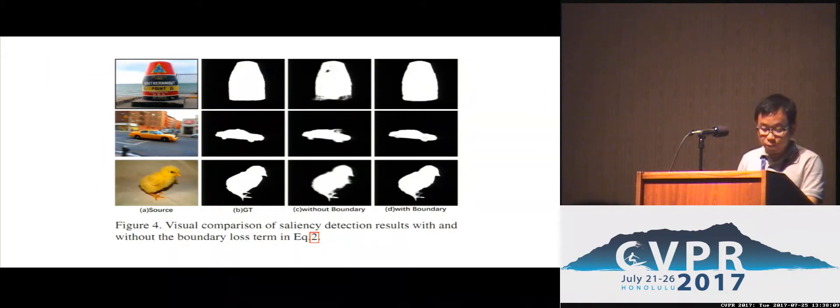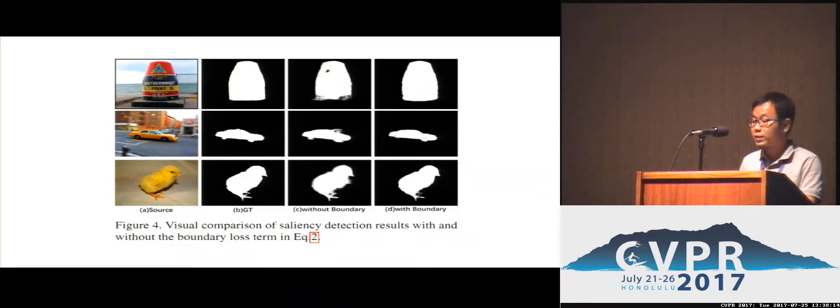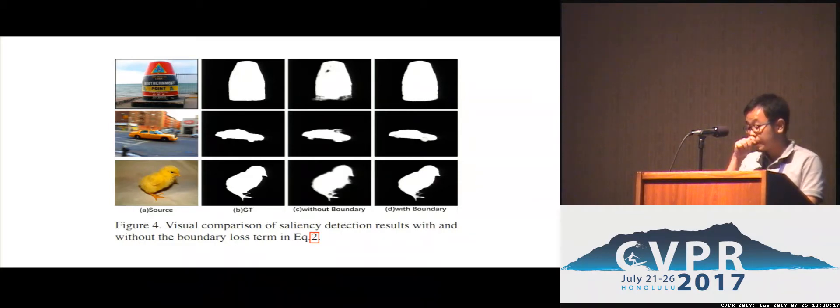These are the results of the model trained with and without the boundary term. Notice that the boundary term can improve the spatial consistency of the result.